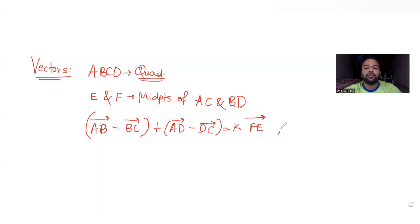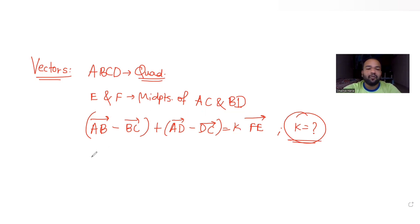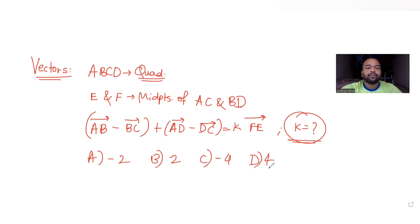We have been asked to find the value of K if this expression is valid. There are four options given: minus 2, 2, minus 4, and 4. We need to figure out which one is the correct value of K.